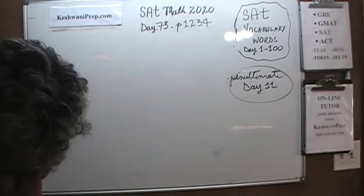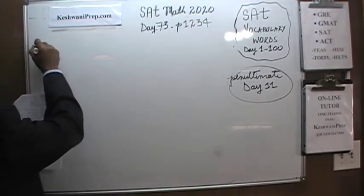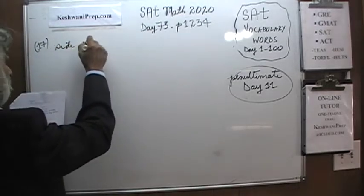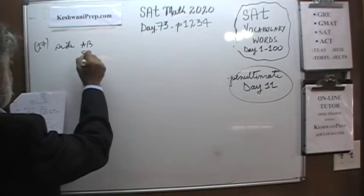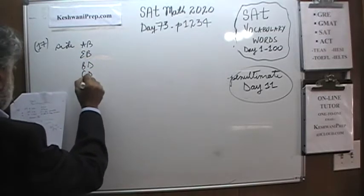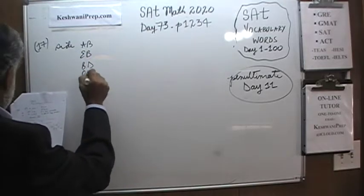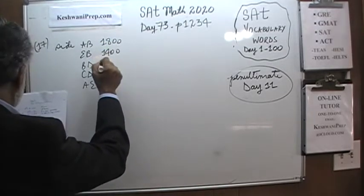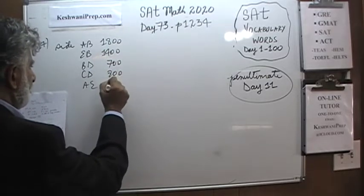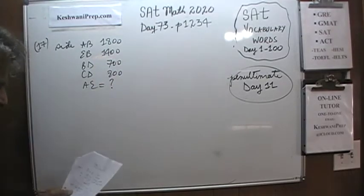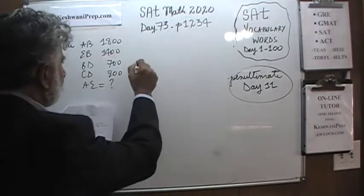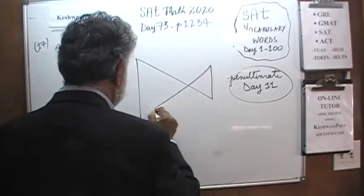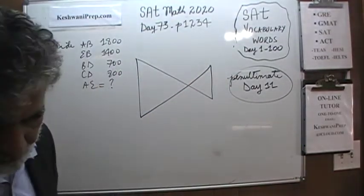Number 17. In number 17, we are told that the sides AB, EB, BD, and CD are 1800, 1400, 700, and 800, and the question is how much is side AE. What we are given here is two triangles like this.